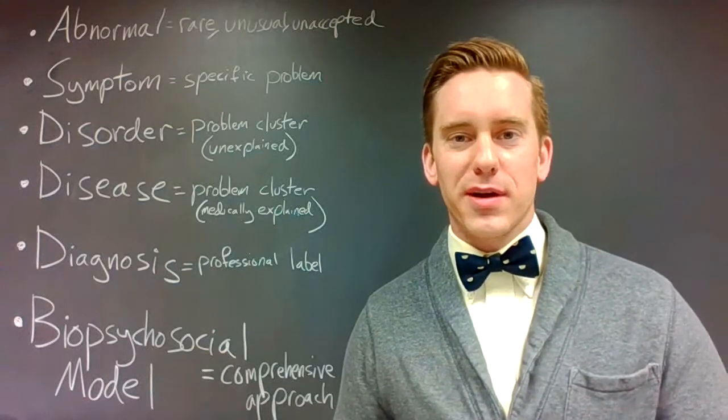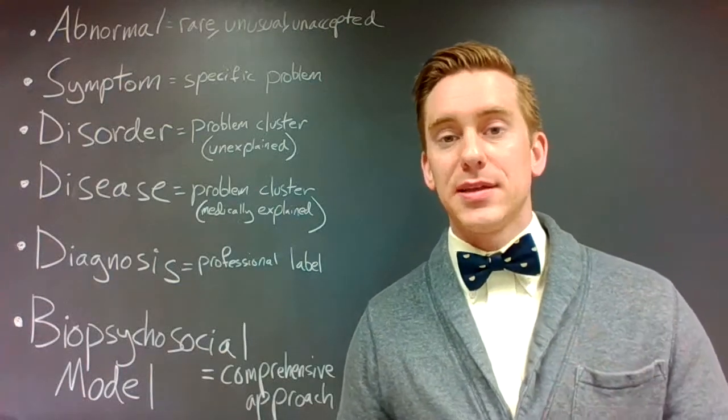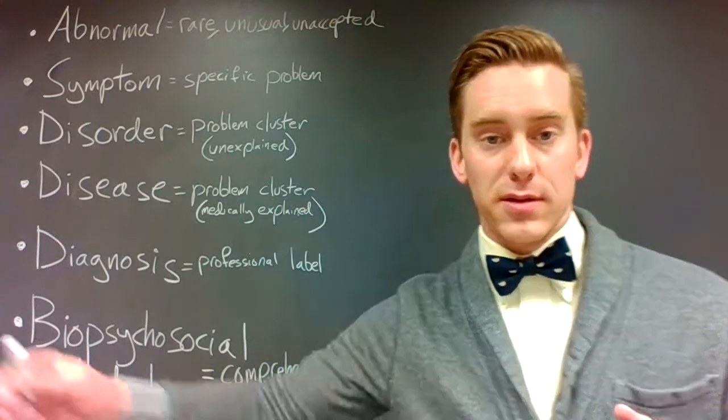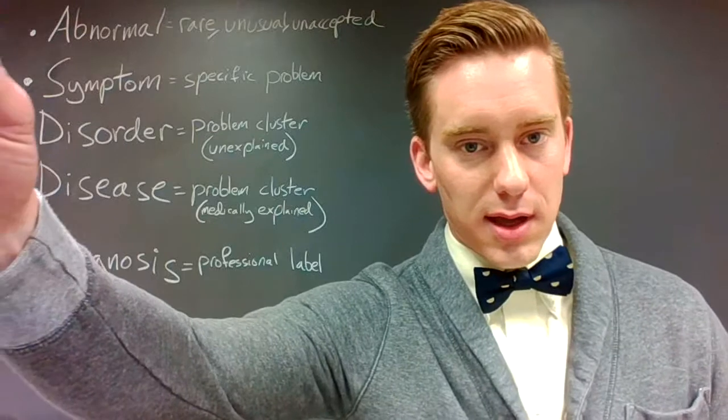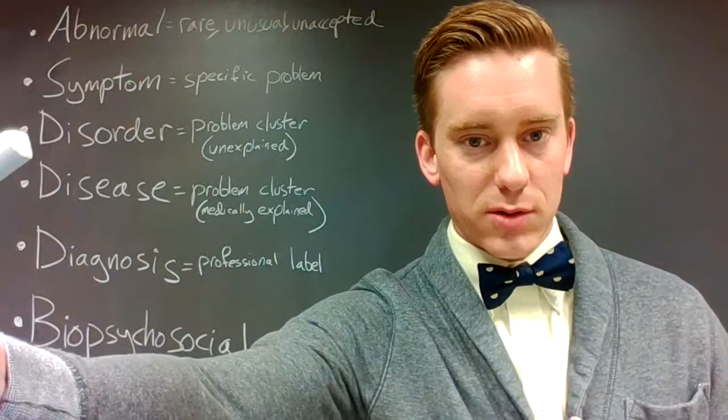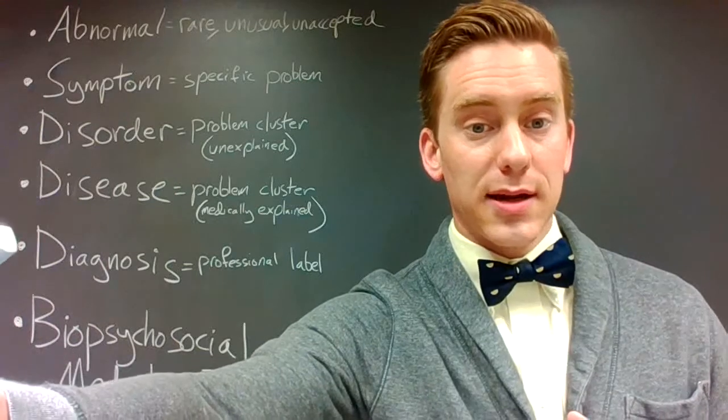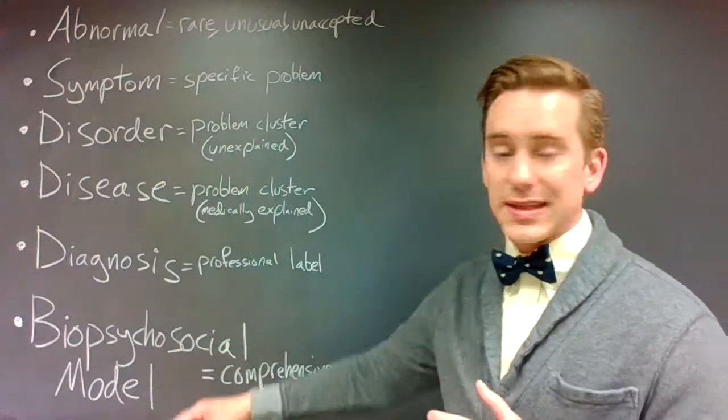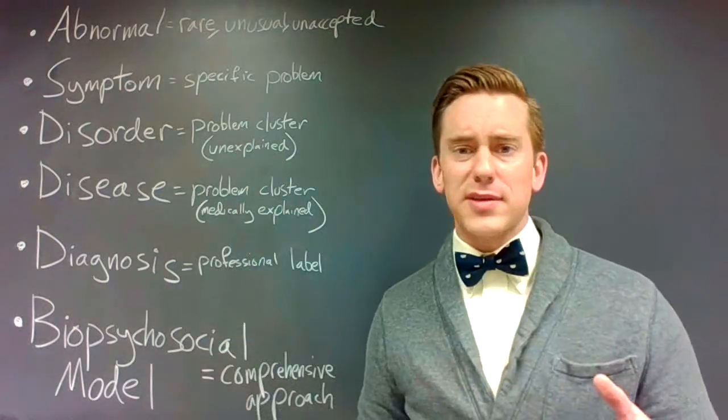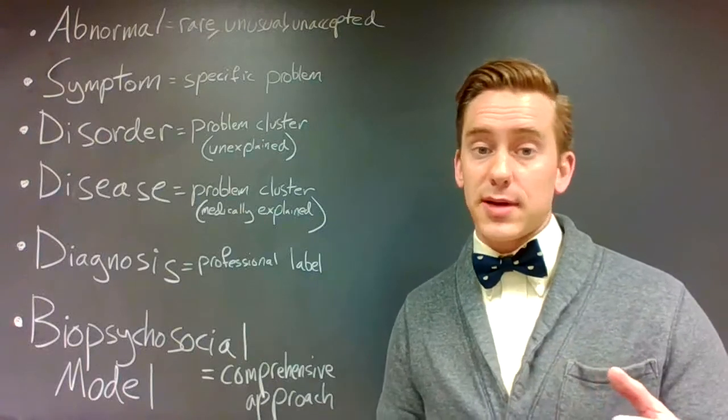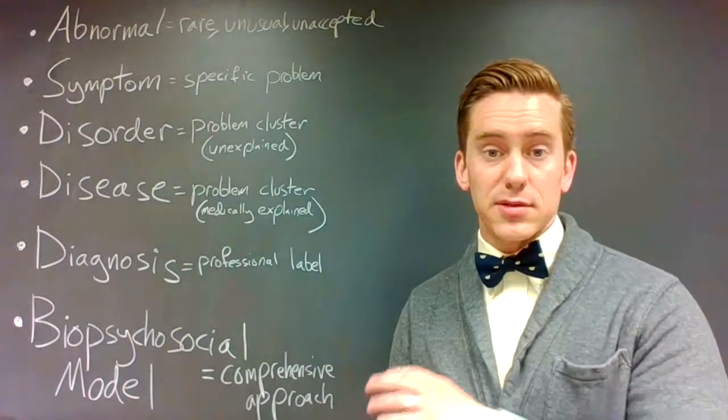Hey everyone! In this brief video I'm going to be discussing six key terms which are really important in the study of abnormal psychology. Those are abnormal, symptom, disorder, disease, diagnosis, and lastly the biopsychosocial model. So I'll go through each of these six terms, just elaborate a little bit on what each of them means and how they'll be important to you in this class. Give a couple examples and then that'll be it.